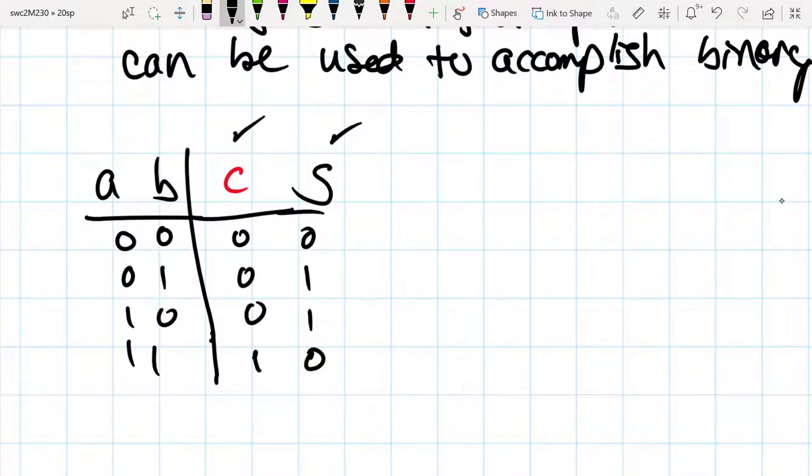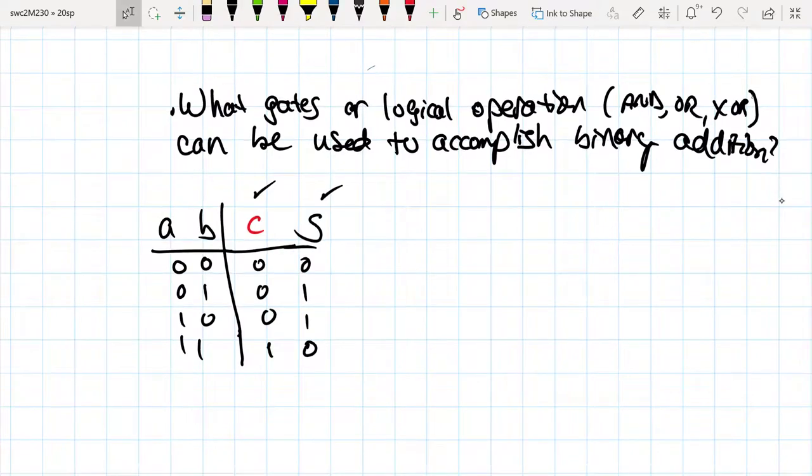Well, it's only true when both inputs are true, when a and b are true. So that would be the and gate. So we get a circuit that requires two outputs.